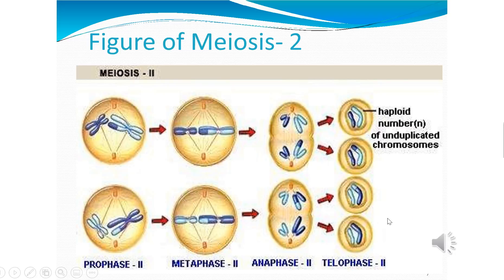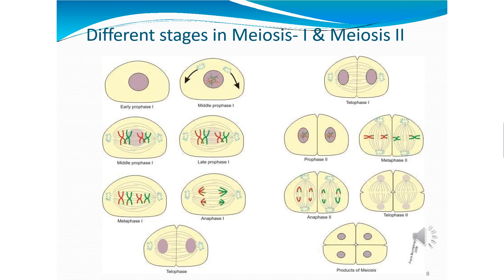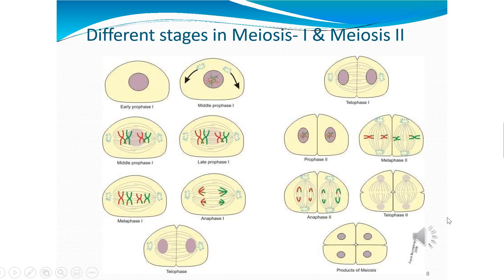This slide is for revision, showing prophase 2, metaphase 2, anaphase 2, and telophase 2. This diagram is for practice — you have to draw the diagram with different colors in your notebook and practice properly so that you may understand the concept of meiosis 1 and meiosis 2.